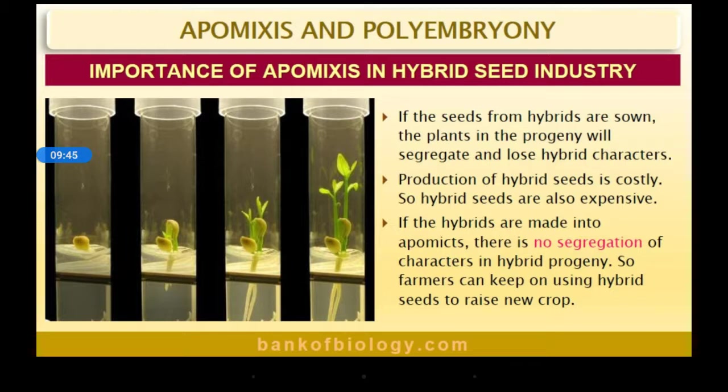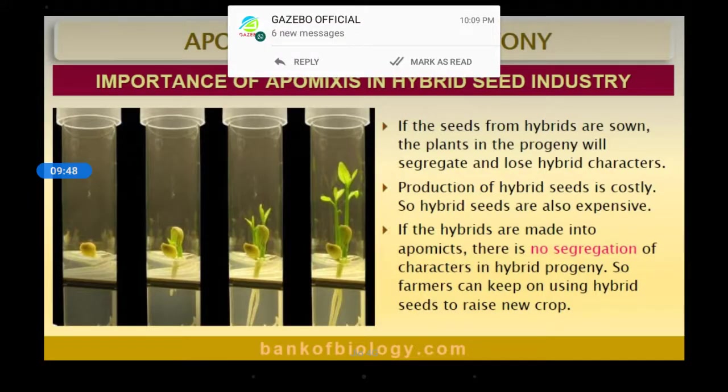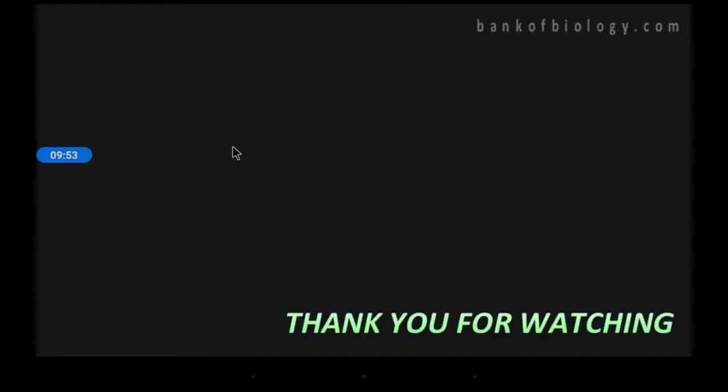So apomixis is the mechanism to produce seeds without fertilization. This covers the topic of how fruits are formed from the ovary, completing the post-fertilization events. I hope these topics are clear to you. Thank you.